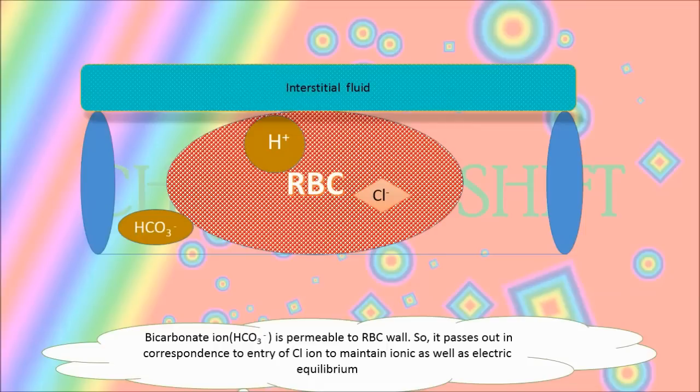Bicarbonate ion is permeable to the RBC wall, so it passes out in correspondence to entry of chlorine ion to maintain ionic as well as electric equilibrium. And this very step we call chloride shift.